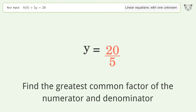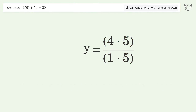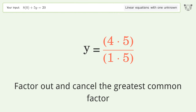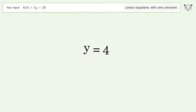Find the greatest common factor of the numerator and denominator. Factor out and cancel the greatest common factor. And so the final result is y equals 4.